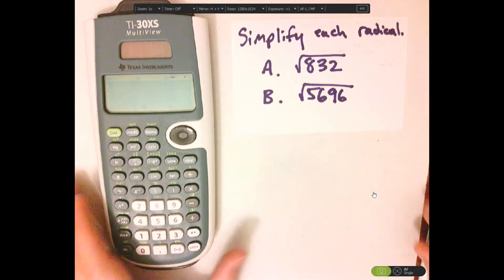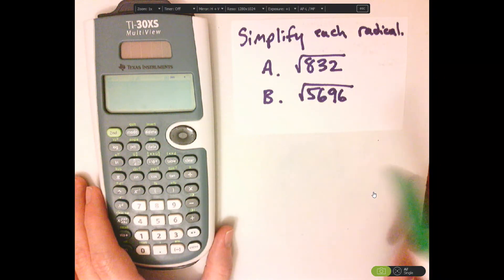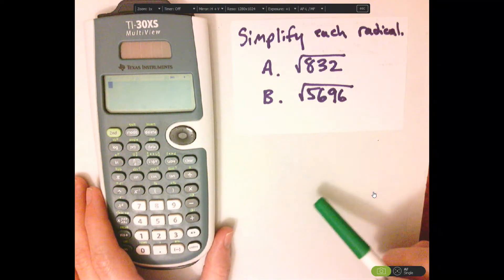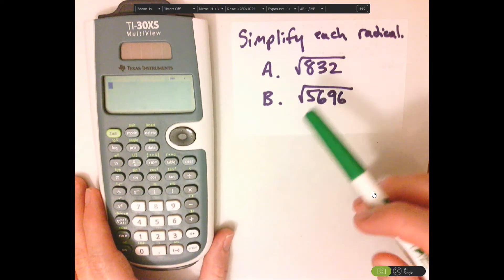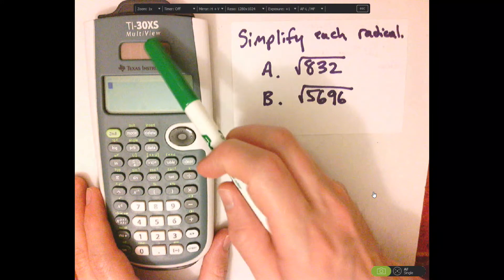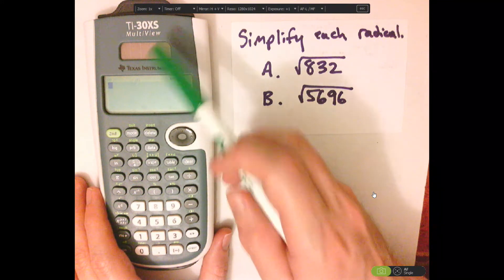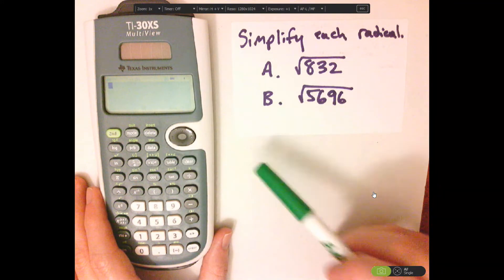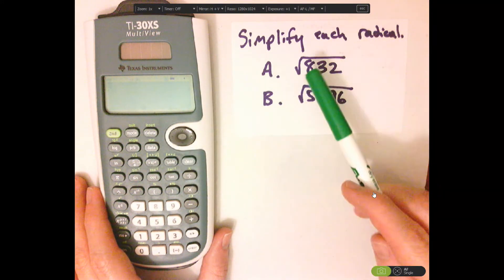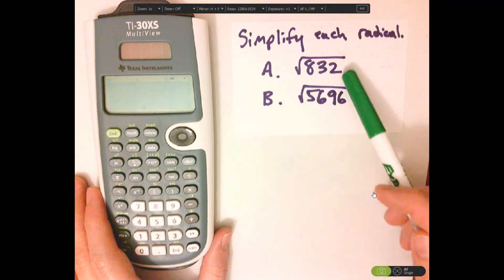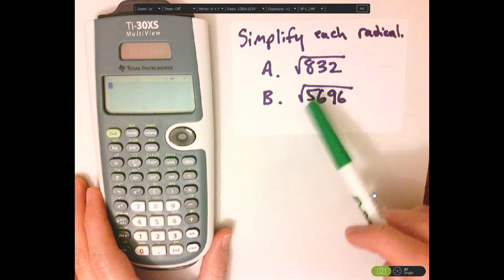Hi, I'm JD, and what we're going to be doing today is using the TI-30XS multi-view calculator to simplify each of these radicals.